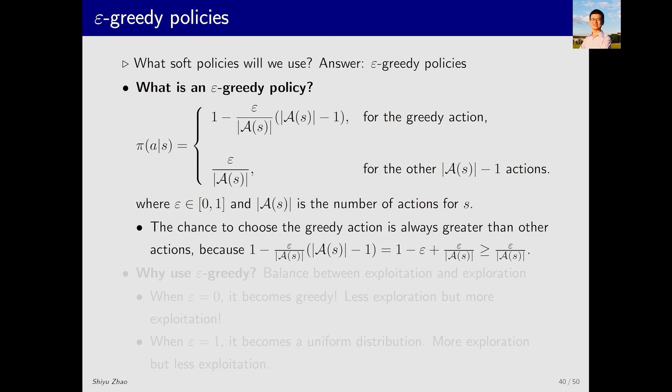An important property is that the chance to choose the greedy action is always greater than other actions. This is easy to see once you examine the equation when epsilon ranges from 0 to 1.